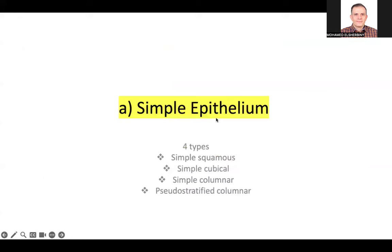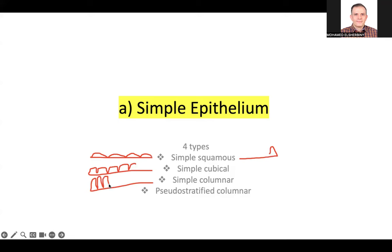We divide simple epithelium according to the shape of the cell. Pseudostratified means it looks stratified from the outside, but ideally it is one layer — however, the cells differ in height: one cell is tall, one cell is short. Because of the different heights, it appears from outside to be stratified with more than one layer, but actually it is a single layer, so it is named simple.